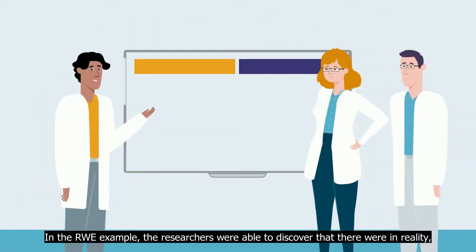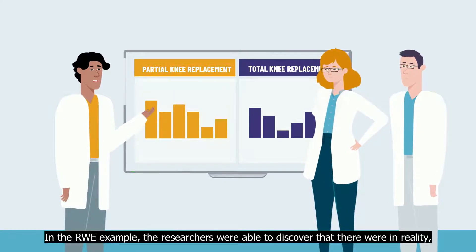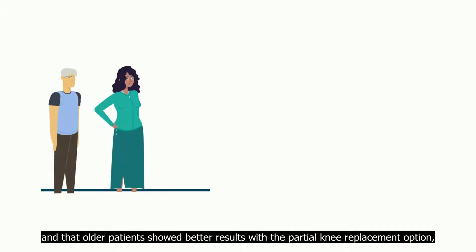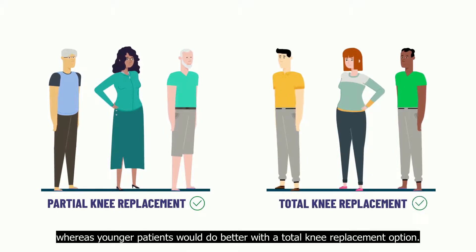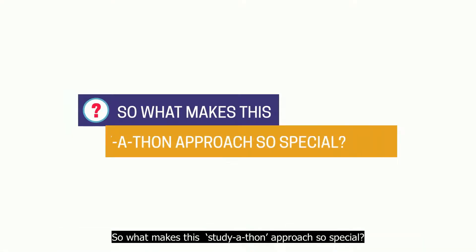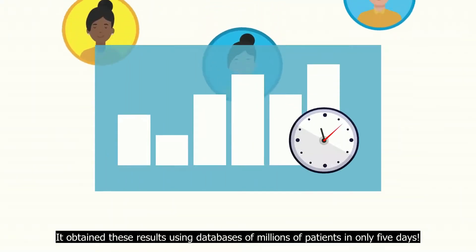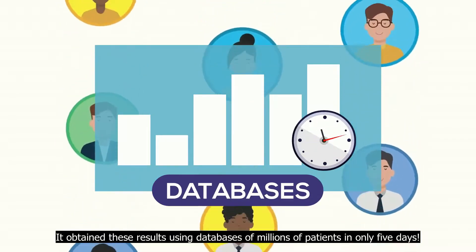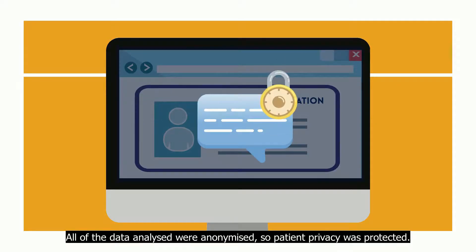In the RWE example, the researchers were able to discover that there were, in reality, differences between the two surgeries, and that older patients showed better results with the partial knee replacement option, whereas younger patients would do better with a total knee replacement option. The study-a-thon approach obtained these results using databases of millions of patients in only five days. All of the data analysed were anonymized, so patient privacy was protected.